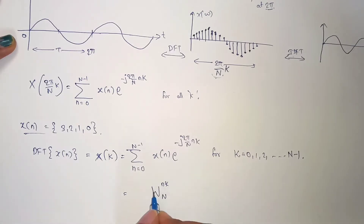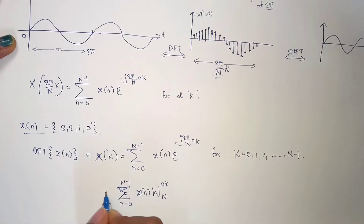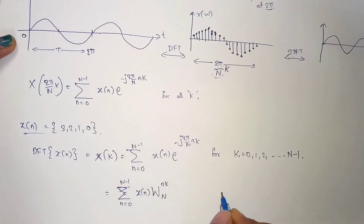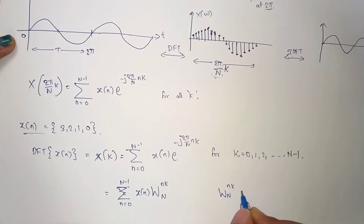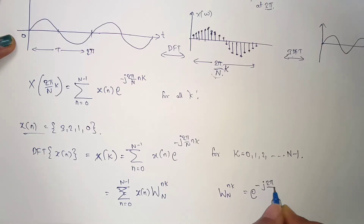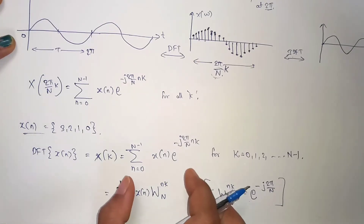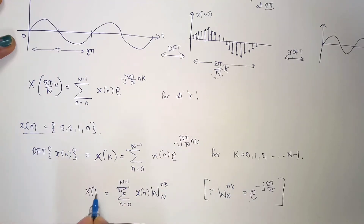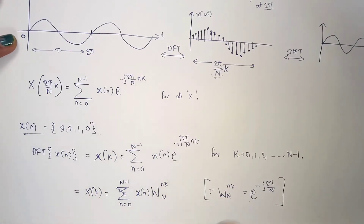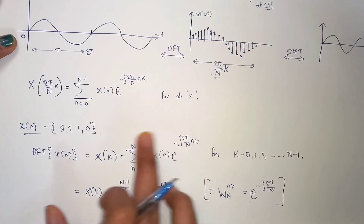So the DFT formula with W notation is: X(k) = summation from n = 0 to N−1 of x(n) · W_N^(nk), where W_N^(nk) = e^(−j2π/N · nk). We can write both forms — the exponential form and the W notation form — whenever the examiner asks for the DFT formula. For solving problems on DFT we use this formula directly.